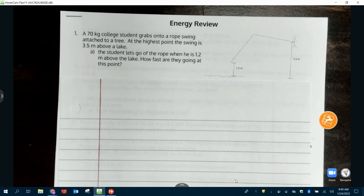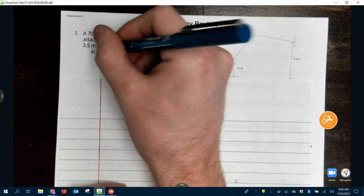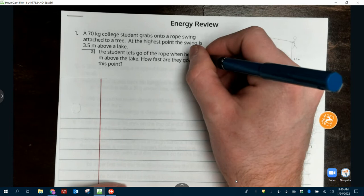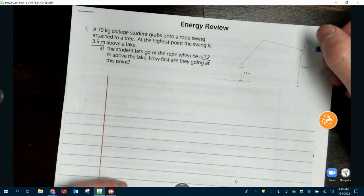Alright, so problem number one. We have a 70 kilogram college student grabs onto a rope swing attached to a tree. At the highest point the swing is 3.5 meters above the lake. The student lets go of the rope when he is 1.2 meters above the lake. How fast is he going?